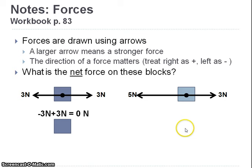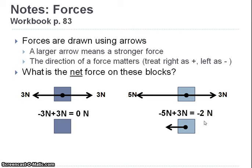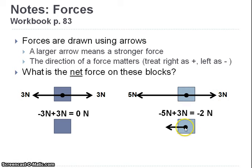On another block with five Newtons to the left and three to the right, we're left with two Newtons acting to the left — a negative two Newtons net force. The arrow for the net force should be a little bit smaller than the five-Newton arrow to indicate two Newtons acting to the left. That would be the net force acting on that block.